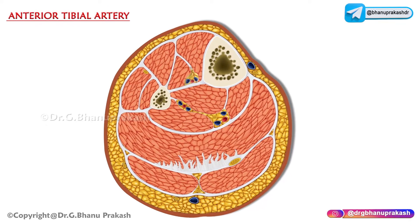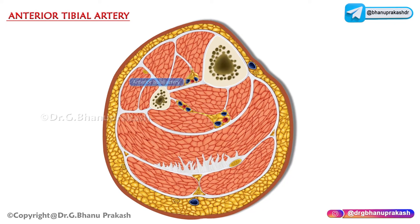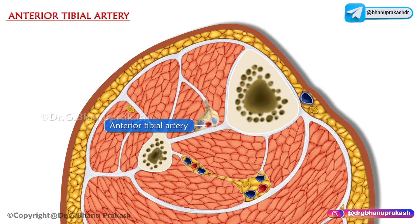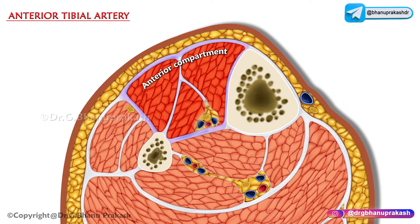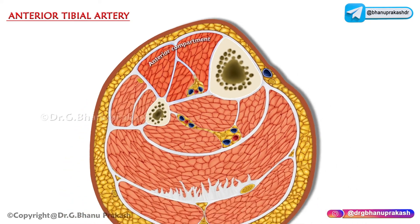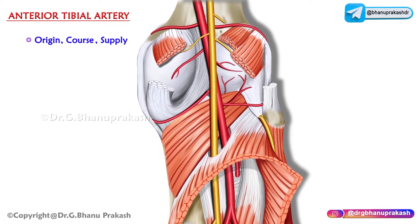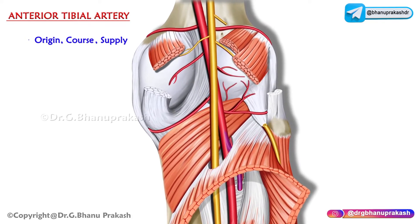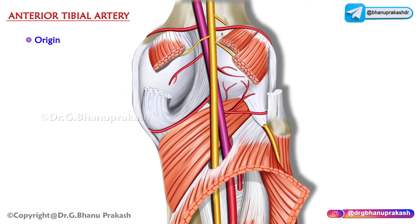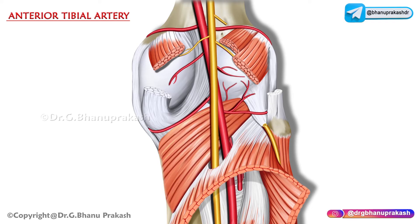The anterior tibial artery is the main artery of the anterior compartment of the leg. Regarding its origin, course, and supply: the origin of the anterior tibial artery is the smaller terminal branch of the popliteal artery, which is given at the lower border of the popliteus muscle.